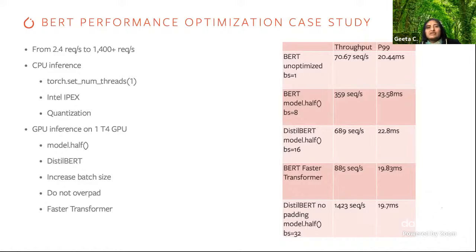Similarly, we did another case study with a customer for an offline batch inference scenario where their original inference pipeline was processing 46 million documents in 21 days. By going through different optimization techniques, we were able to bring it down to two days.